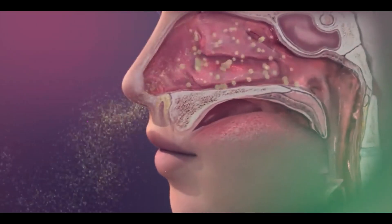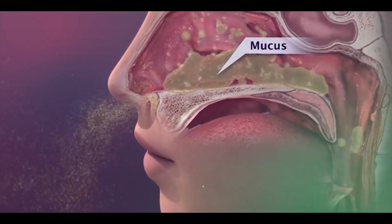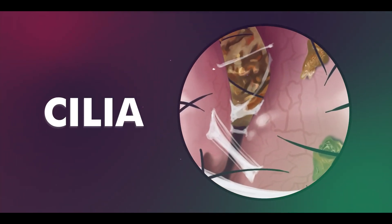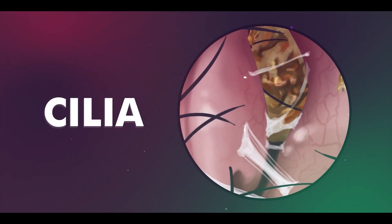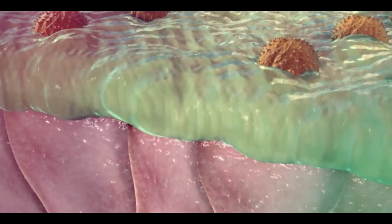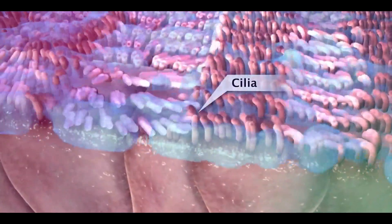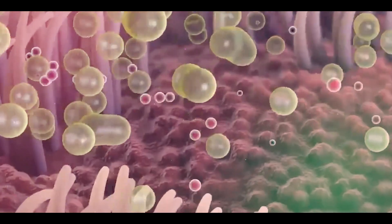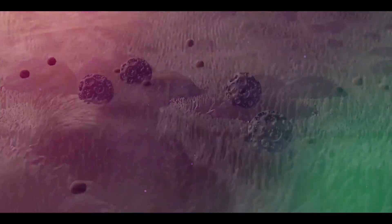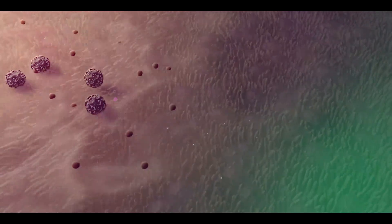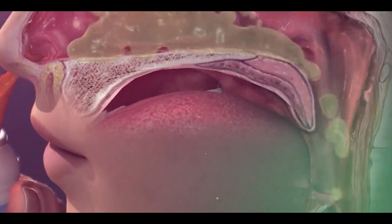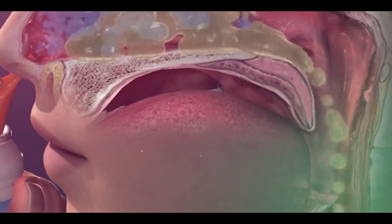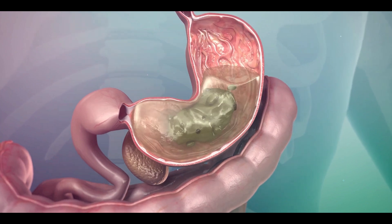Now, you might be wondering how our body gets rid of these boogers and the trapped particles. Luckily, our nose has a fantastic self-cleaning mechanism. The cilia, those tiny hairs I mentioned earlier, constantly move in a sweeping motion to push the mucus and its contents towards the back of the throat. This process, known as the mucociliary clearance, helps to remove the boogers and their contents from the nasal passages and down the throat, where they eventually get swallowed and safely digested by our stomach acid.